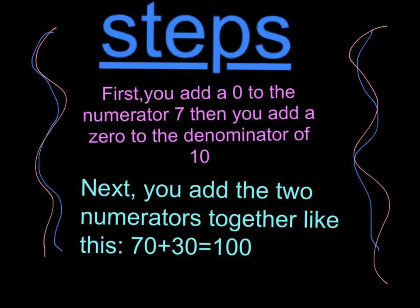Steps. First you add a 0 to the numerator of 7. Then you add a 0 to the denominator of 10. Next you add the two numerators together like this. 70 plus 30 equals 100.